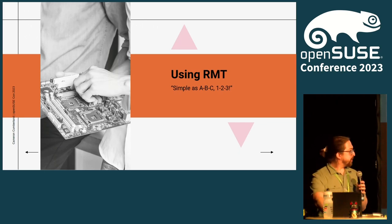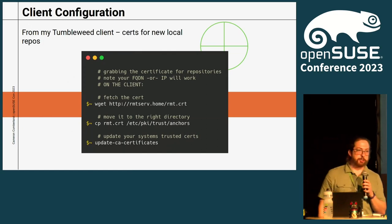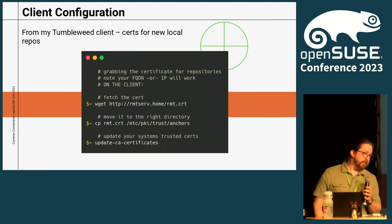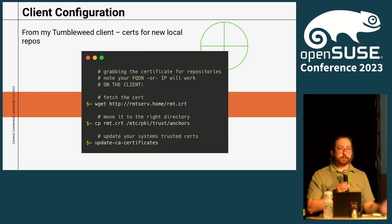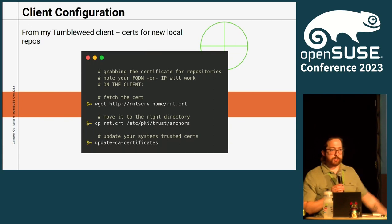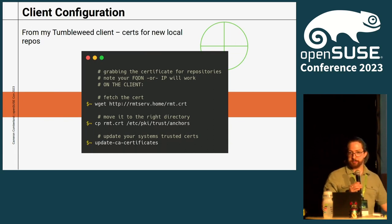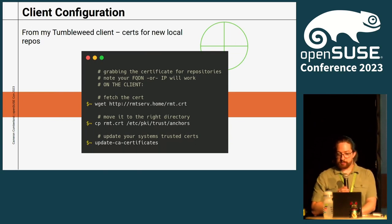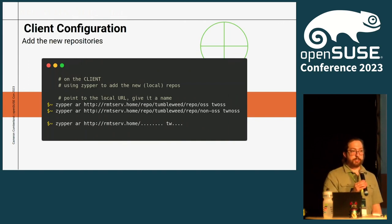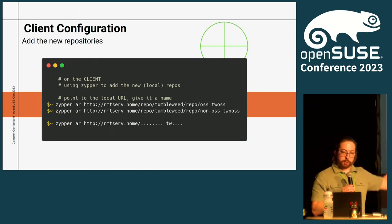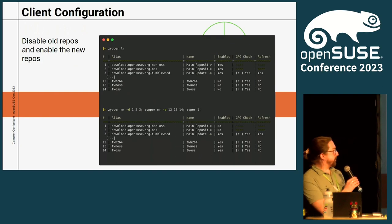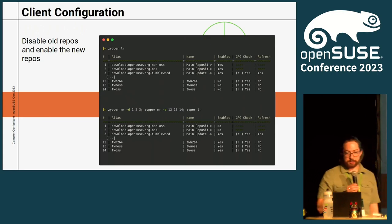Using RMT is pretty simple — here's the client configuration. You will need to fetch the certificate for the RMT server from the RMT server itself. You can just wget or curl it — it's the FQDN at the home directory slash rmt.crt. Copy that down to your client, move it to the right directory — /etc/pki/trust/anchors — which is where your system keeps trusted certificates, and then update your system's trust. Then you also have to add the repositories to your client using zypper ar with the new local repository for your FQDN. You can do this with Ansible scripting or salt management if you have that set up. Then disable your old repositories and enable the new ones.